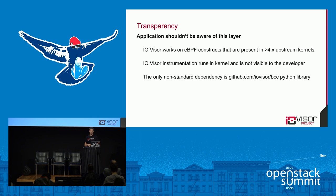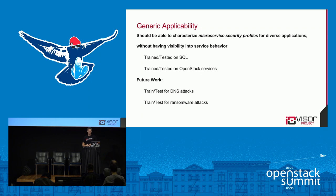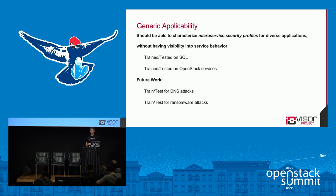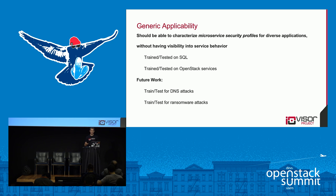The tools rely on a GitHub repository under the IOvisor umbrella that provides the tools and use cases. In terms of generality, we showed two different applications — two different types of microservices: OpenStack services composed of many binaries, and something focused on MySQL. But the tool didn't change — it was generic, looking at a generic set of kernel properties. Future work includes scaling this to other types of attacks, such as DNS-based attacks and ransomware, to see if the training set and profile generation works for those use cases.